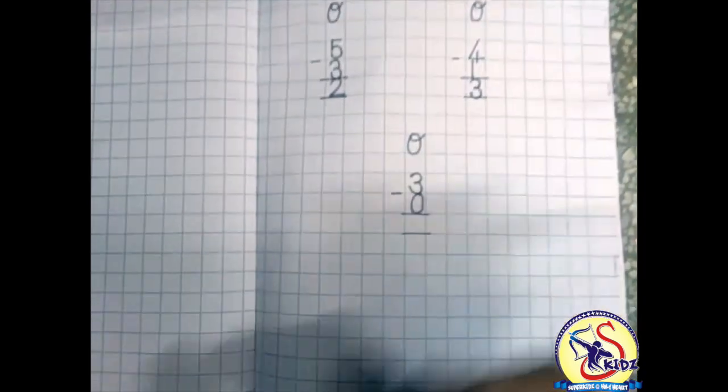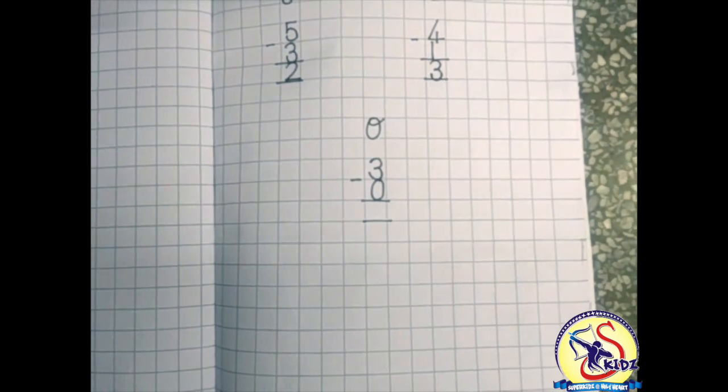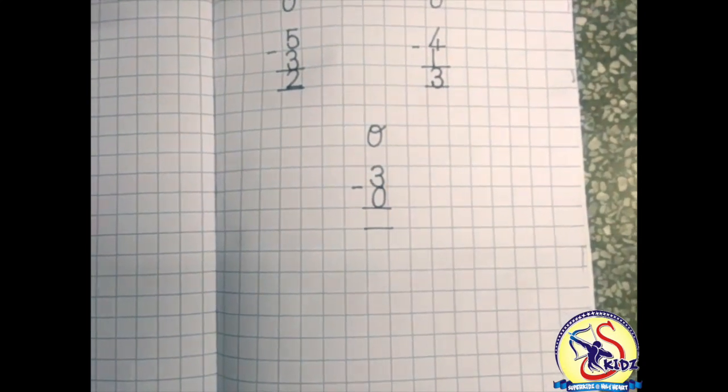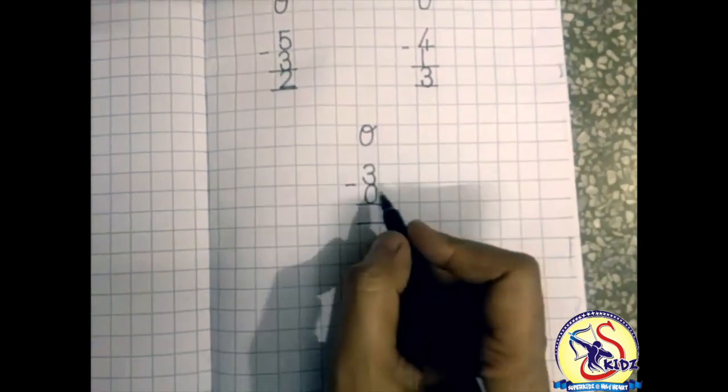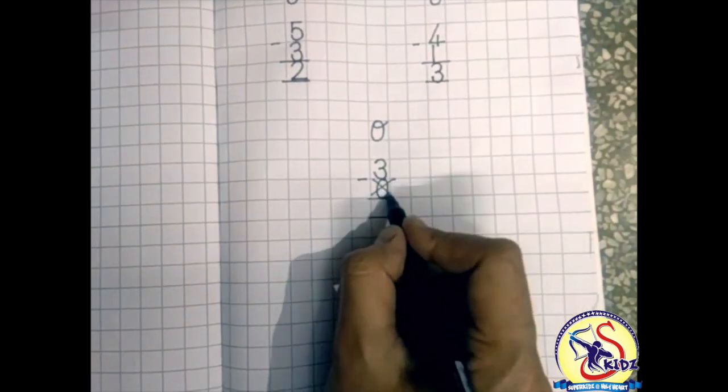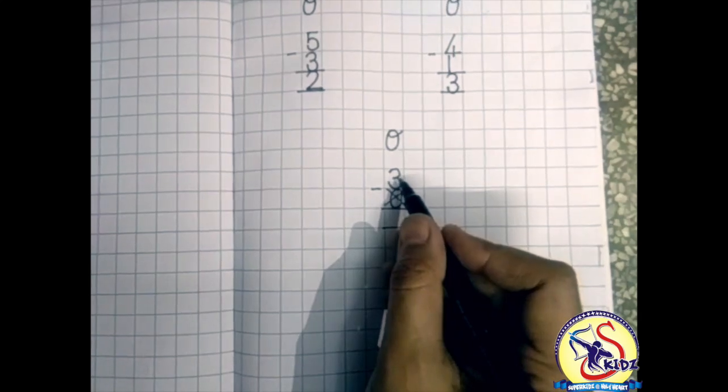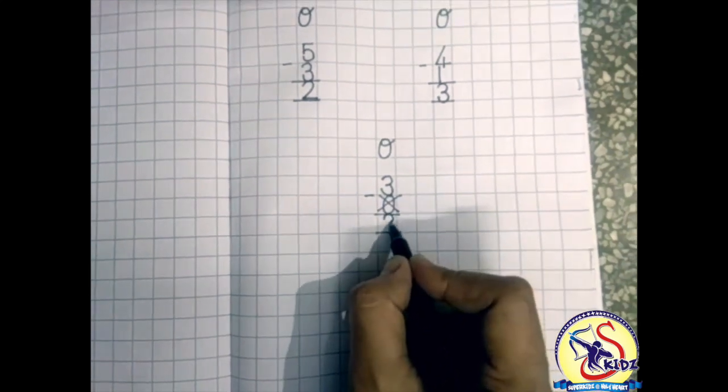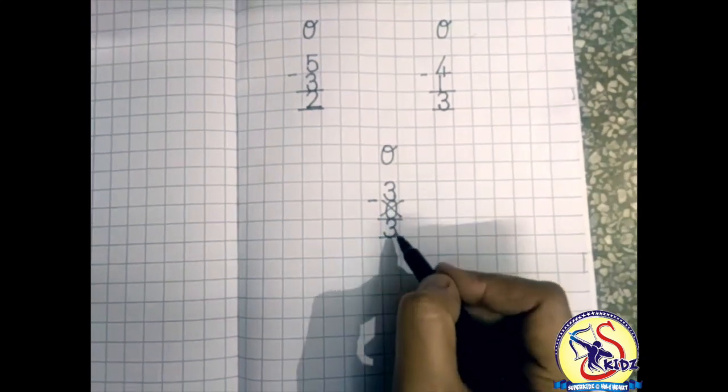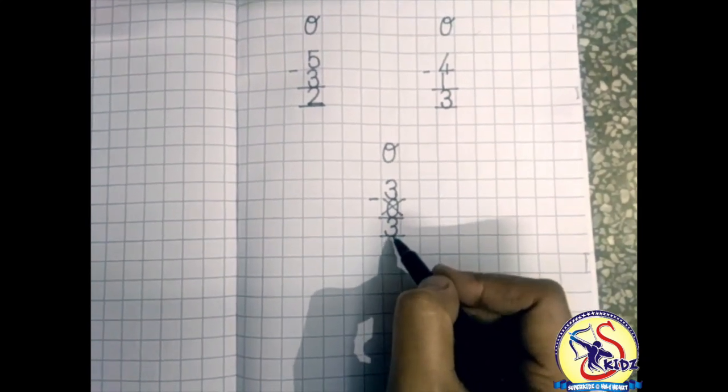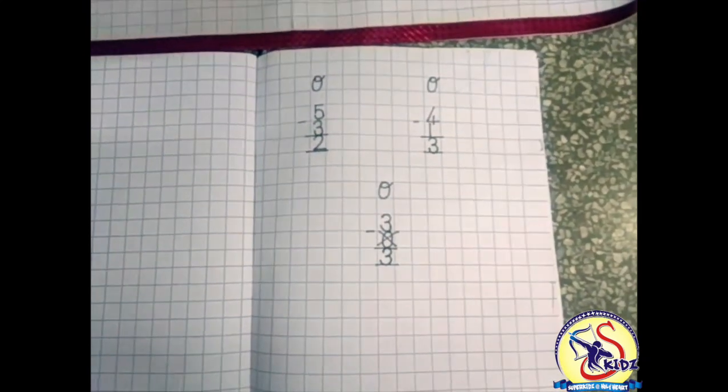Now the next is three minus zero. So zero has no value, so we will cut zero and we will get simply the answer three. Three minus zero is equals to three. So I hope it is clear to you.